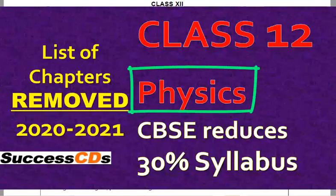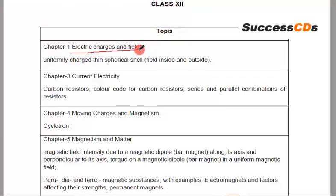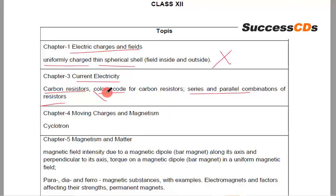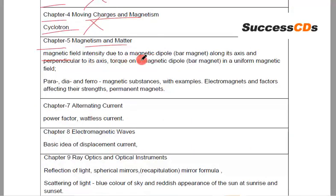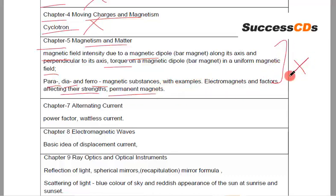Now let us see what topics have been deleted from class 12 Physics. Chapter 1, Electric Charges and Fields: uniformly charged thin spherical shell — deleted. Chapter 3, Current Electricity: carbon resistors, color code for carbon resistors, and series and parallel combinations of resistors — deleted. Chapter 4, Moving Charges and Magnetism: cyclotron — deleted. Chapter 5, Magnetism and Matter: magnetic field intensity due to a magnetic dipole along its axis and perpendicular to its axis, torque on a magnetic dipole in a uniform magnetic field, para-, dia-, ferromagnetic substances with examples, electromagnets and factors affecting their strengths, and permanent magnets — all deleted. Chapter 7, Alternating Current: power factor and wattless current — deleted.